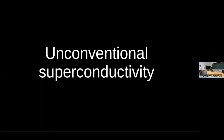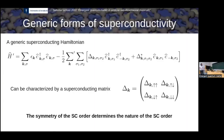Now let us move on to unconventional superconductivity — superconducting orders that are no longer S-wave, no longer uniform in momentum space, and that can actually change sign and even change phase in momentum space. In a generic Hamiltonian with superconductivity, we have our single-particle electronic dispersion as before, but now we can have many different superconducting orders: C-dagger-up/up, up-down, down-down, and all combinations. The basic idea is that for the simplest superconductor, a single-band superconductor, the superconducting order is not just a number but a matrix.